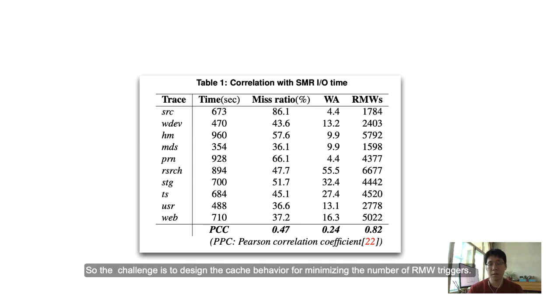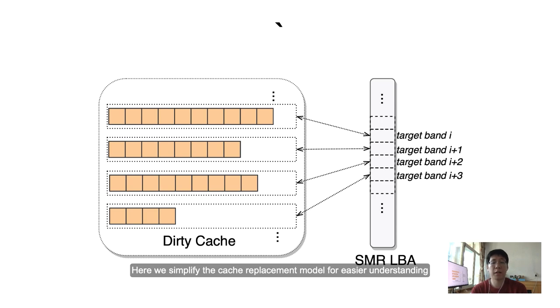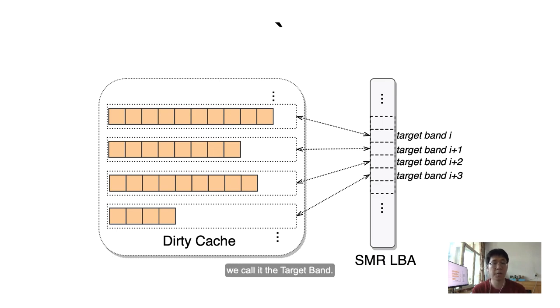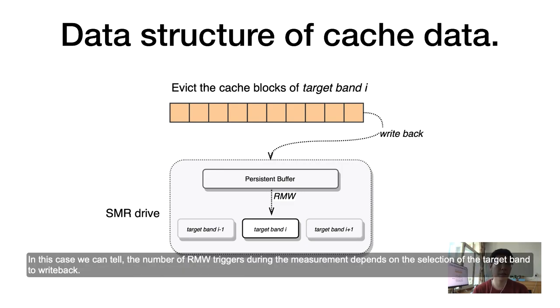The challenge is to design the cache behavior for minimizing the number of RMW triggers. Let's see how we do this. Here we simplify the cache replacement model for easier understanding. In this part, we only discuss the cache space for write operations. We organize the dirty blocks in the cache layer according to the band they belong to. We call it the target band. Every time when the cache space is full, we select one target band to write back the dirty blocks from the cache layer, and that will definitely trigger one RMW operation later in SMR drive. In this case, we can tell the number of RMW triggers during the measurement depends on the selection of target band to write back.